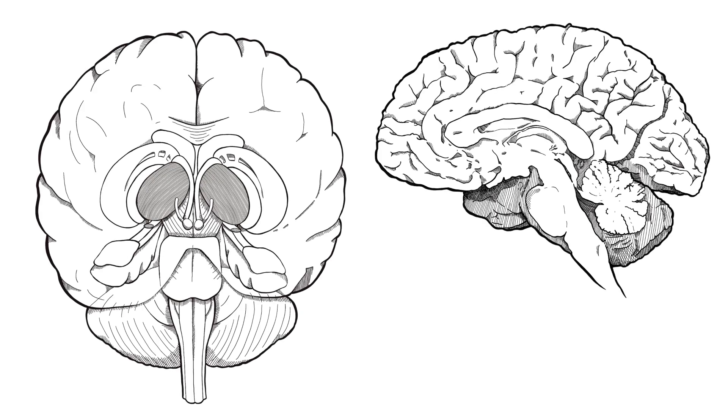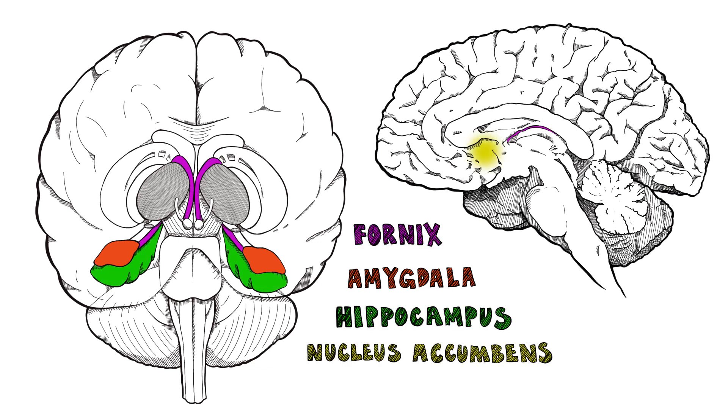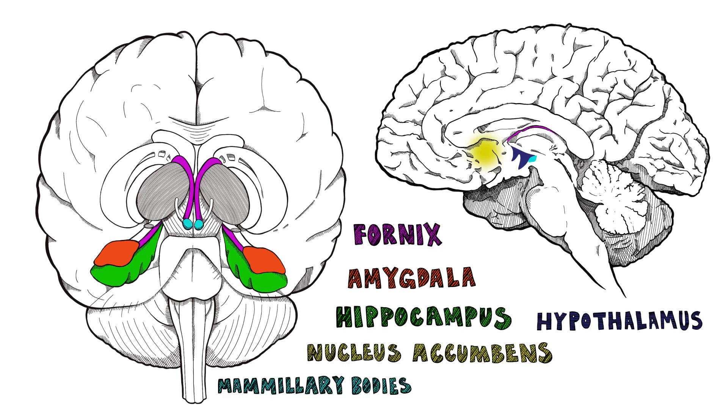It includes the amygdala, hippocampus, fornix, and nucleus accumbens, hypothalamus, mammillary bodies, as well as other friends.